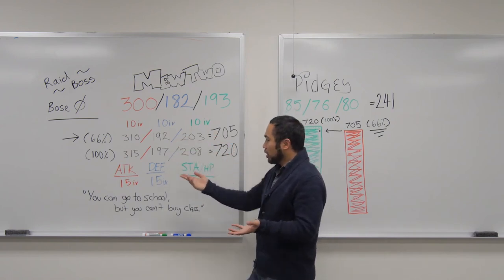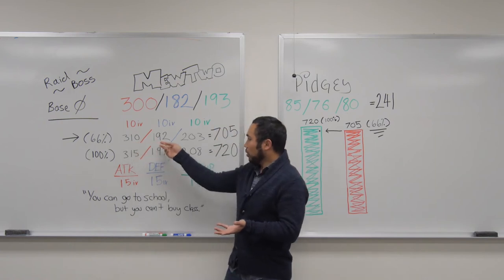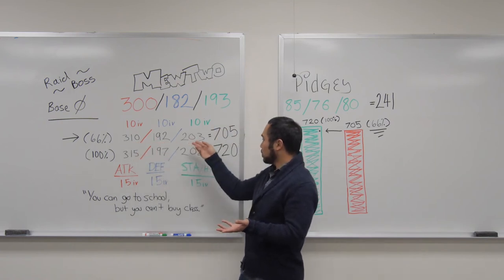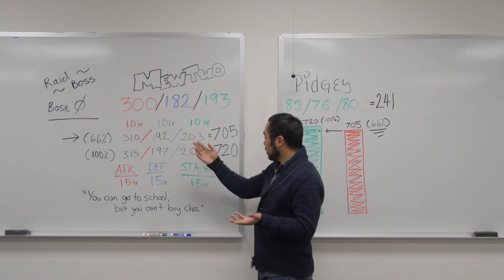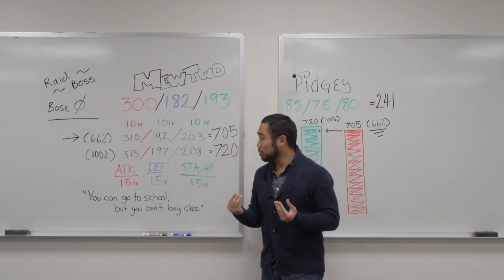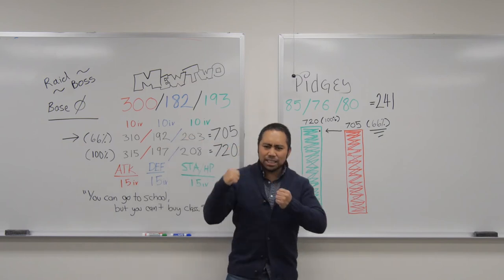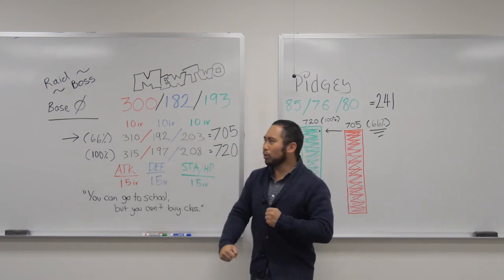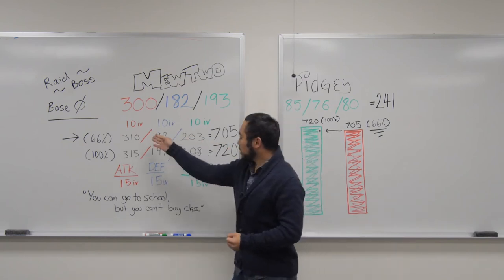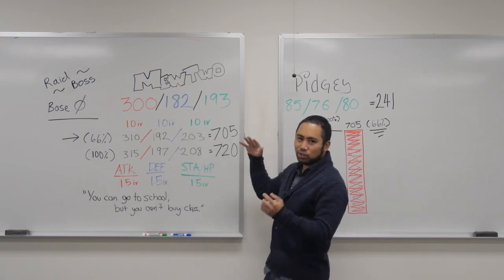310 Attack, 192 Defense, 203 Stamina. It's still a good Pokemon. I mean, just look at that. 310. That's like a Vander Holyfield. You just add all of that together. That's 705 total stat points.